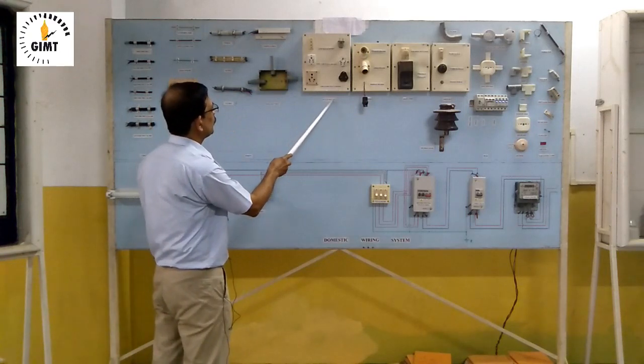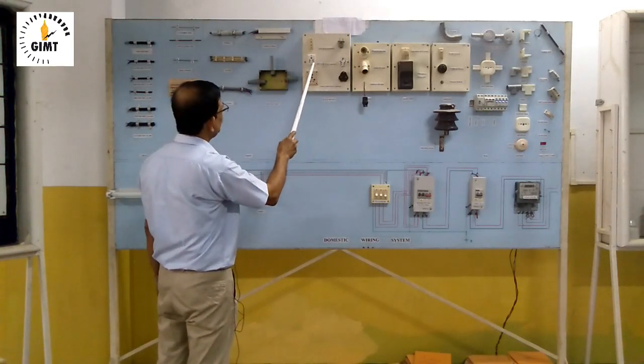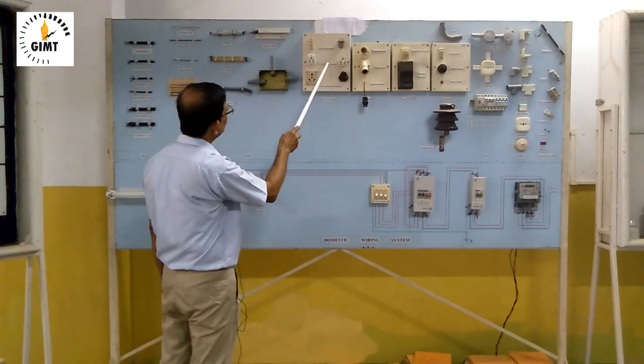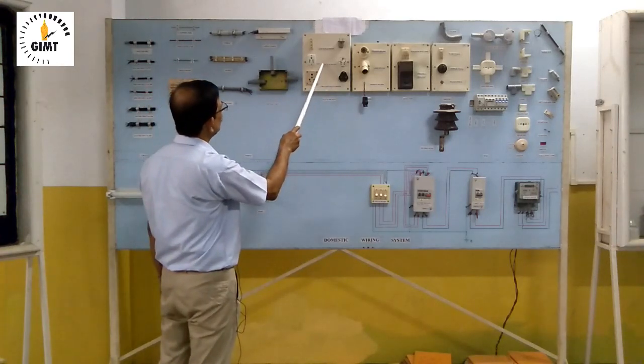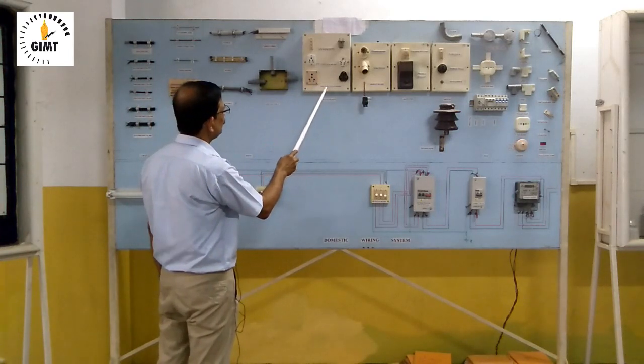Come to plug and socket. This is two-pin plug and socket, three-pin plug and socket. Then three-pin plug and socket. You have seen the two three-pin plug and socket, but what is the difference? This three-pin plug and socket is of 5A. This three-pin plug and socket is 15A.